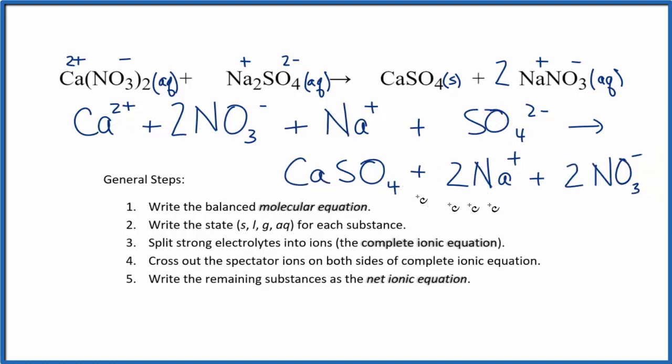We have our reactants and our products. Now we can cross out spectator ions. These ions appear on both sides of the chemical reaction. So if we look at this here, Ca2+ on the reactants, I don't have that in the products. Here it's bonded to the sulfate. Nitrates, 2 nitrate ions, I have them here and in the products. So I can cross those out. Those are spectator ions. They haven't changed.